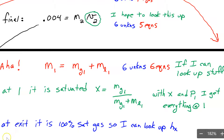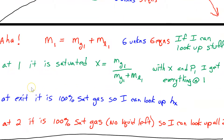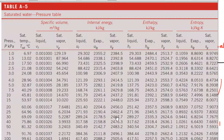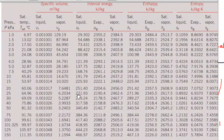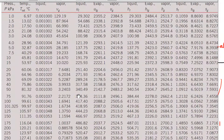At state two, it's 100% saturated gas — there's no liquid left. The pressure is still the same as at the beginning, so the quality is x equals one. You can also look up all the values for state two. The next thing is to figure out which table we're in and look up the values.